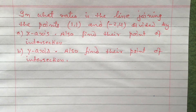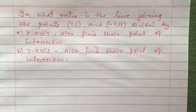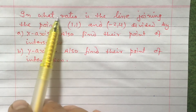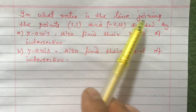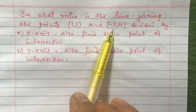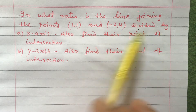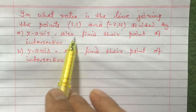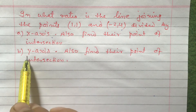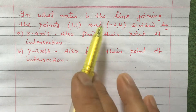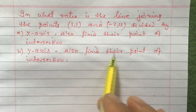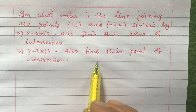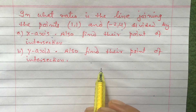Dear students, today I'm going to teach a question from the Class 9 book which is related to the section formula chapter. The question is: in what ratio is the line joining the points (1,1) and (-2,4) divided by the x-axis? Also find their point of intersection. The second part asks the same for the y-axis.